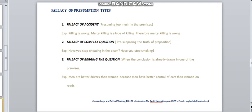The third one is the Fallacy of Begging the Question. This fallacy occurs when the conclusion is already drawn in one of the premises. For example, men are better drivers than women because men have better control of cars than women on roads. In this example, you see that the conclusion has been already drawn that men are better drivers. A better driver already has a good grip or a good control over a car and roads. This is called the Fallacy of Begging the Question.